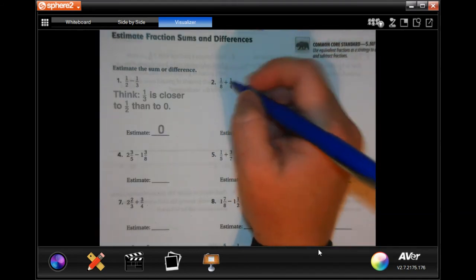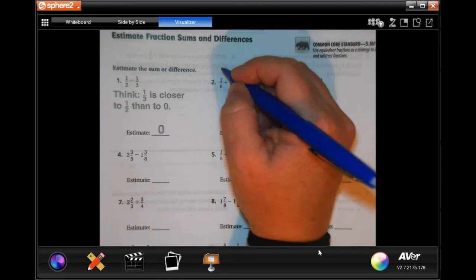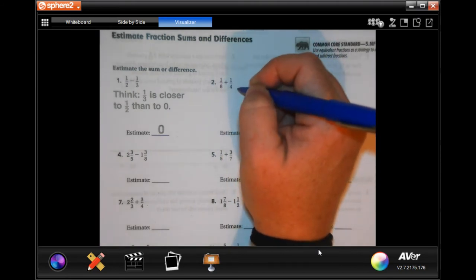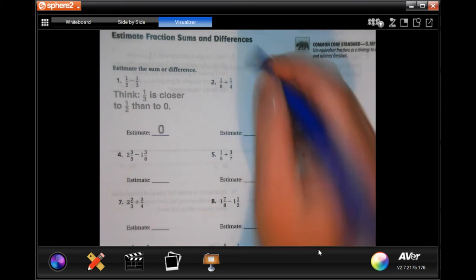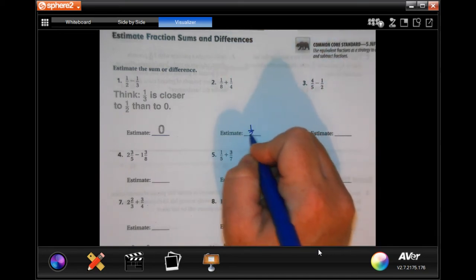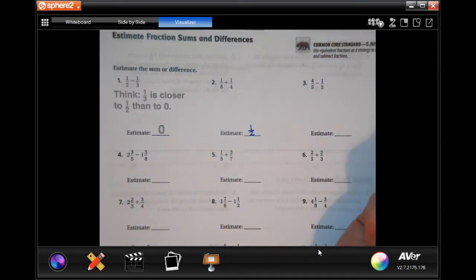So 1/8 is pretty close to zero and 1/4 is pretty close to a half, so 0 plus 1/2 is 1/2. That's it.